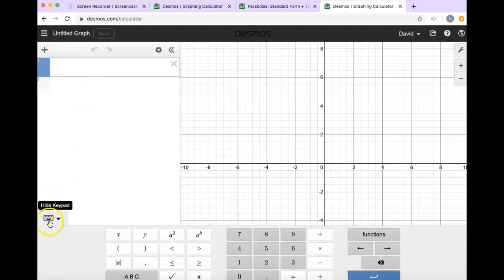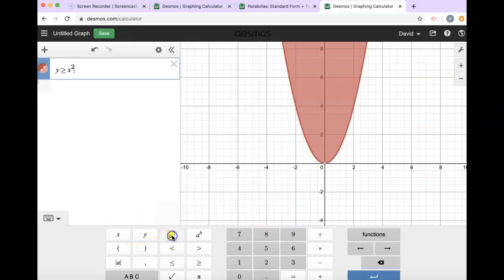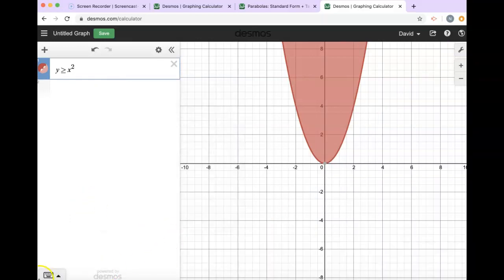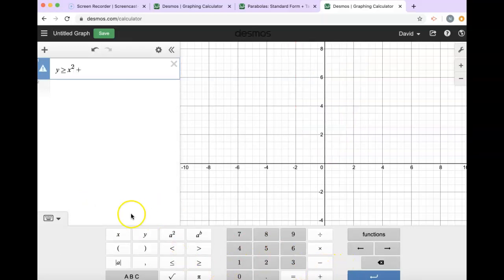So if we want to enter that first parabola, we're going to bring up the keyboard and you can use function notation or you can use y, and instead of our equal sign we're going to use one of our inequality symbols. When you want to square your x, you just hit the x squared button and then just finish.